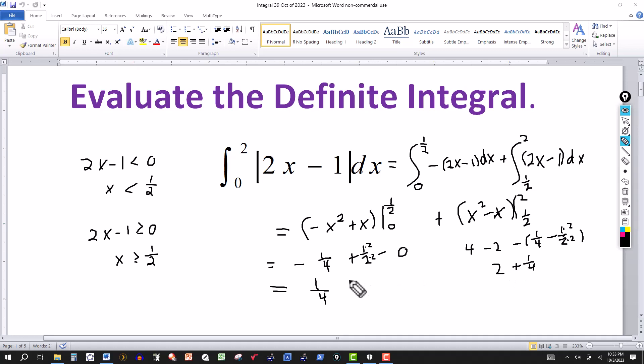Then we combine these two. 2 plus 1 fourth is 9 over 4. 1 fourth and 9 fourths is 10 over 4. Reduce it down, 2 into 10 is 5, 2 into 4 is 2. So 5 halves is the value of the integral. Thanks for watching, we'll see you next time.